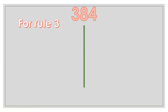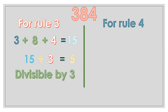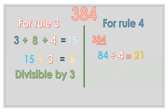For example, 384. To check divisibility by 3, we add the digits: 3 plus 8 plus 4 equals 15. Then 15 divided by 3 equals 5, so it is divisible by 3. For divisibility by 4, the last two digits are 84. Since 84 divided by 4 equals 21, it is also divisible by 4.